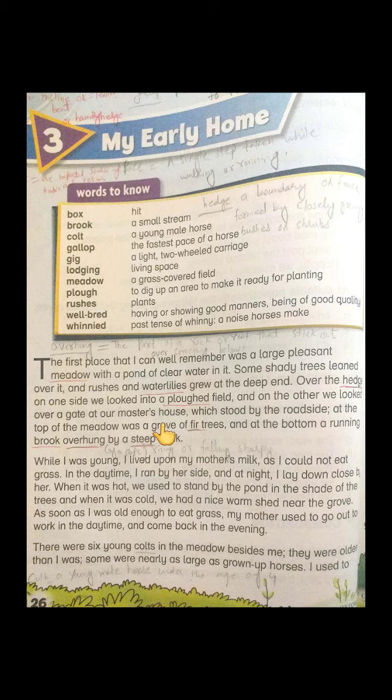This lesson is written by a female writer whose name is Anna Sewell. She has written a book, and this lesson is just a small extract of that novel. That book is all about the life story and experiences of a horse whose name is Black Beauty, who is treated by his owners very well in the beginning of his life, but in his later life he is mistreated by his owners.